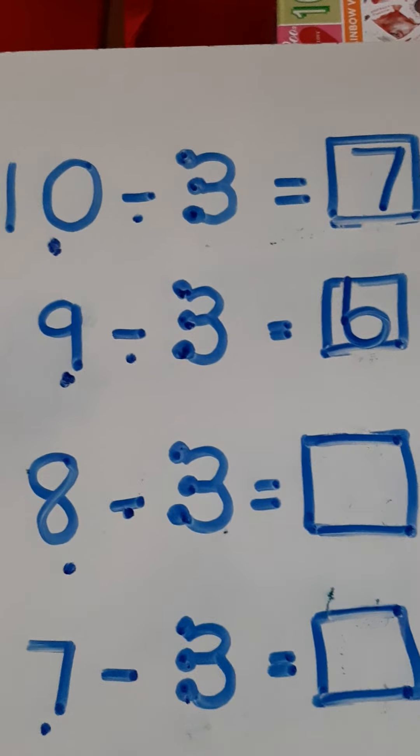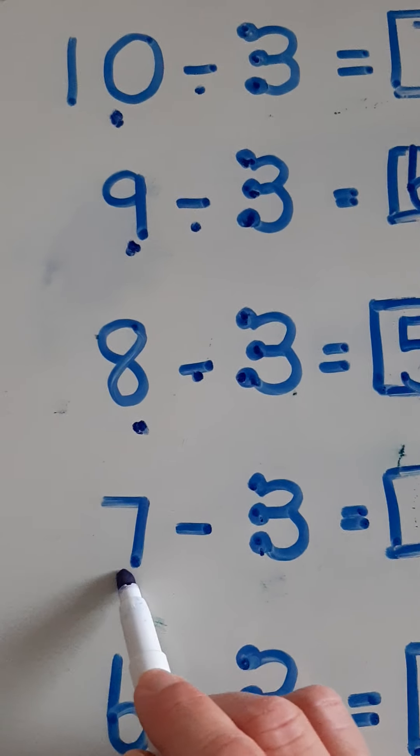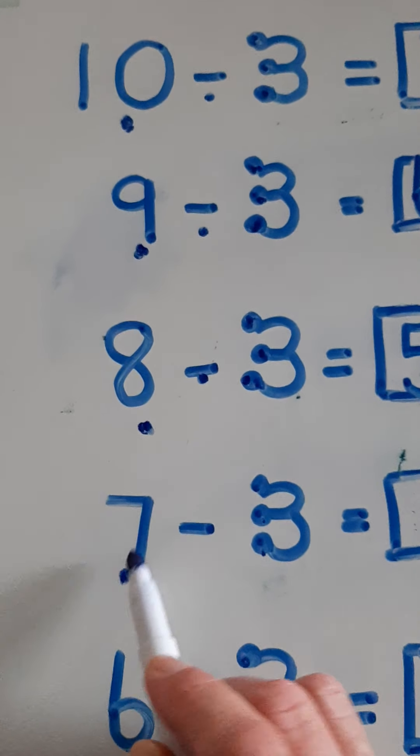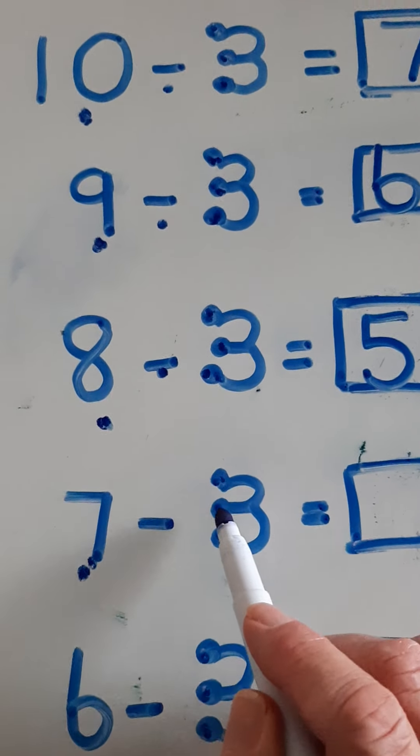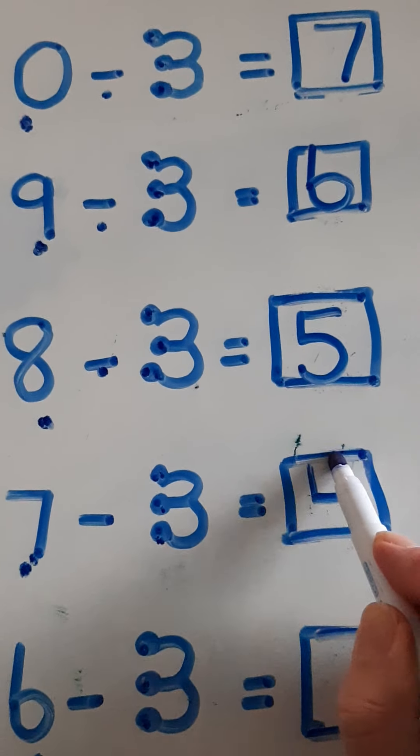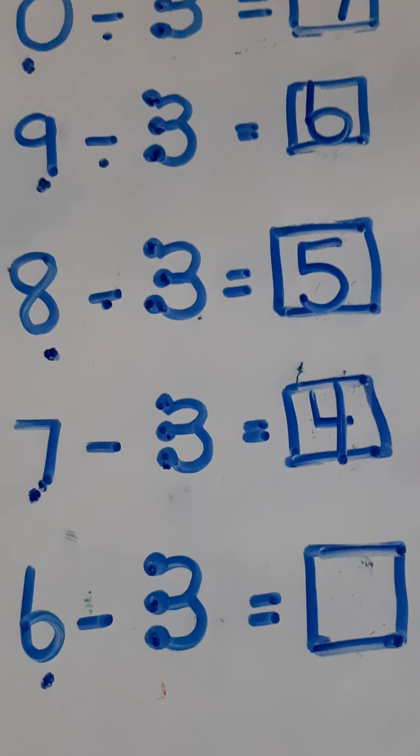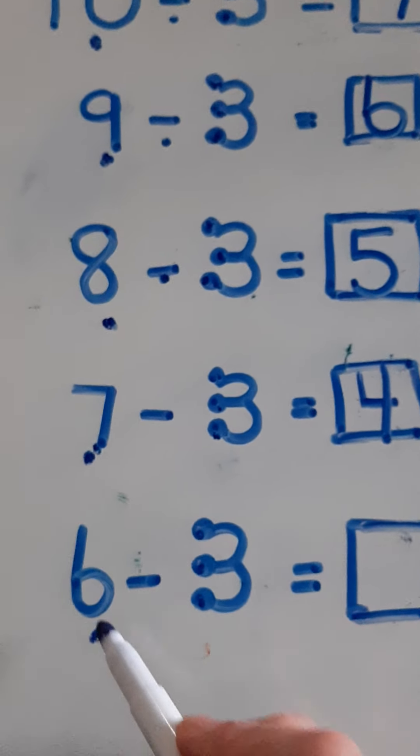Okay, why are we counting backwards? Because we're taking away. Let's try 8 take away 3. Tap 8 and then count backwards on three: 8, 7, 6, 5. Eight take away 3 equals 5.